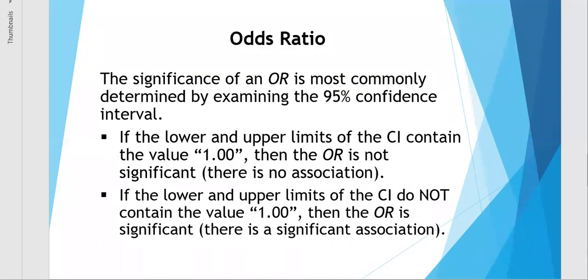So the significance of an odds ratio is determined by examining the 95% confidence interval. If the lower and upper limits of that confidence interval contain the value of 1.00, which means no association, then the odds ratio is not significant. There is no association. But if the lower and upper limits of the confidence interval do not contain the value of 1.00, then the odds ratio is significant. There is a significant association.